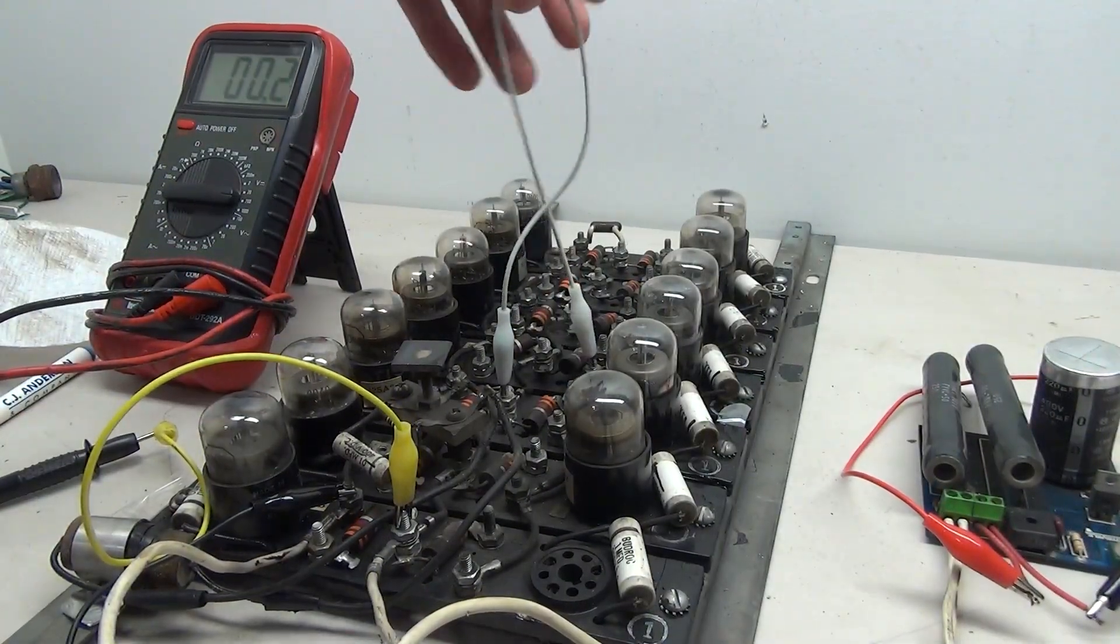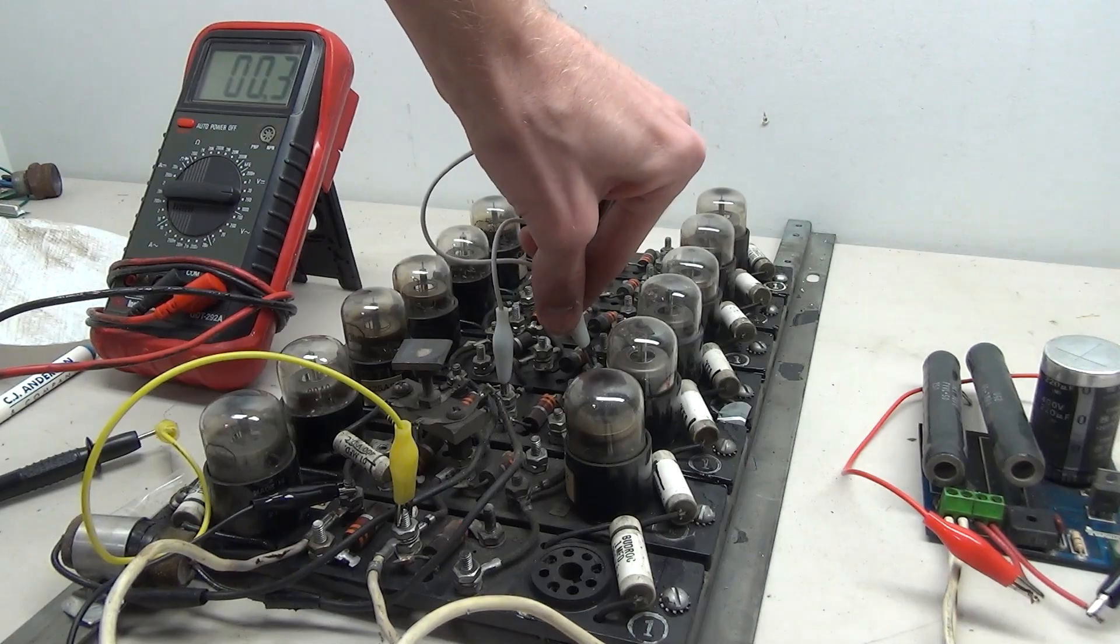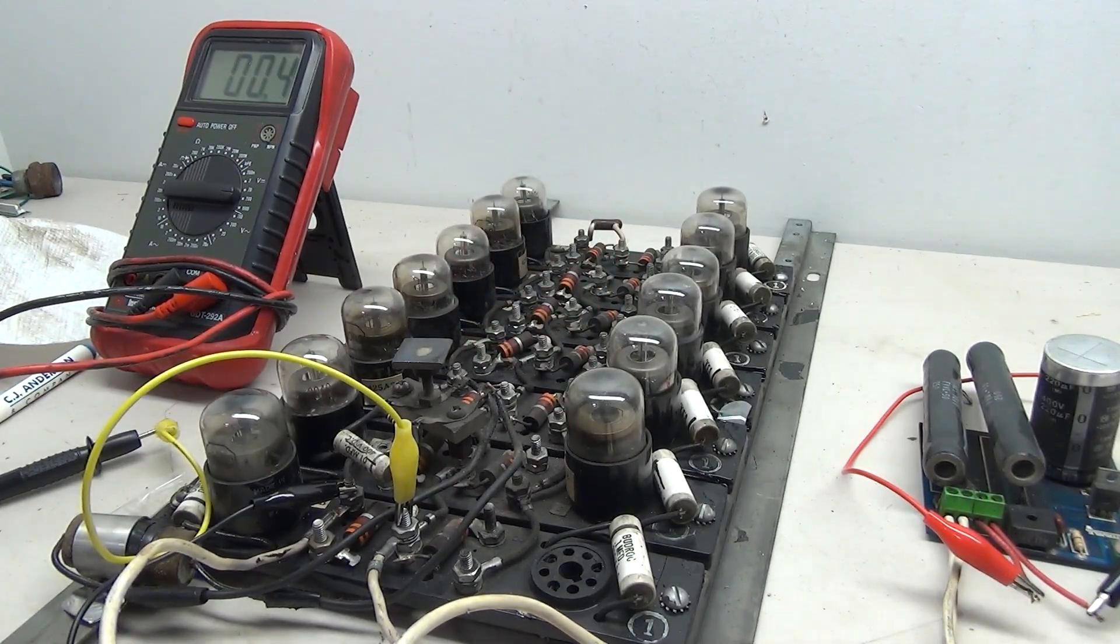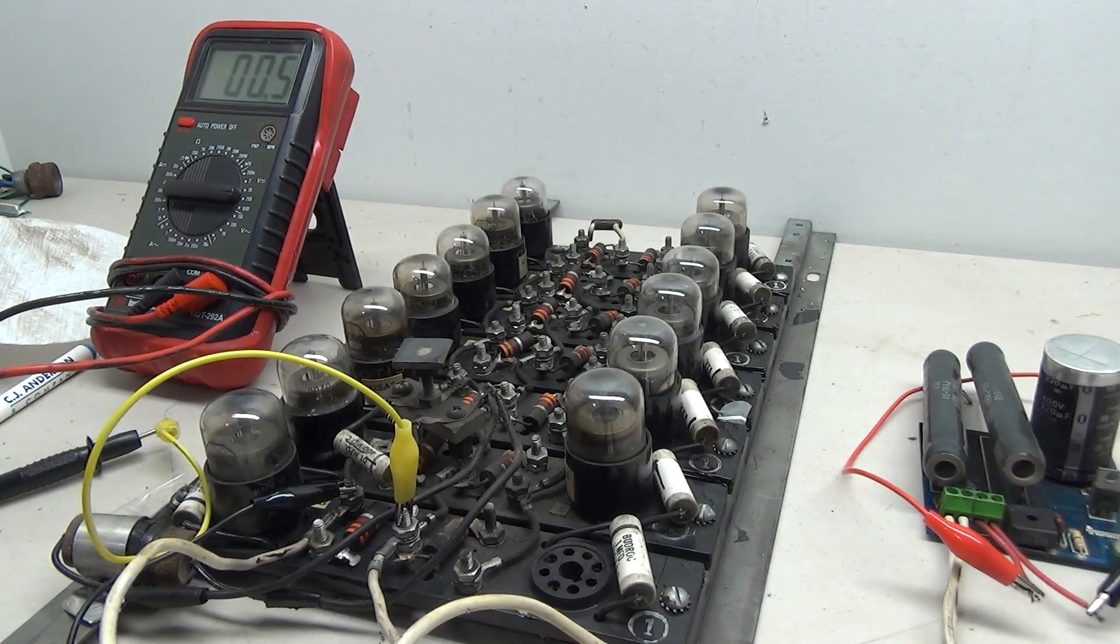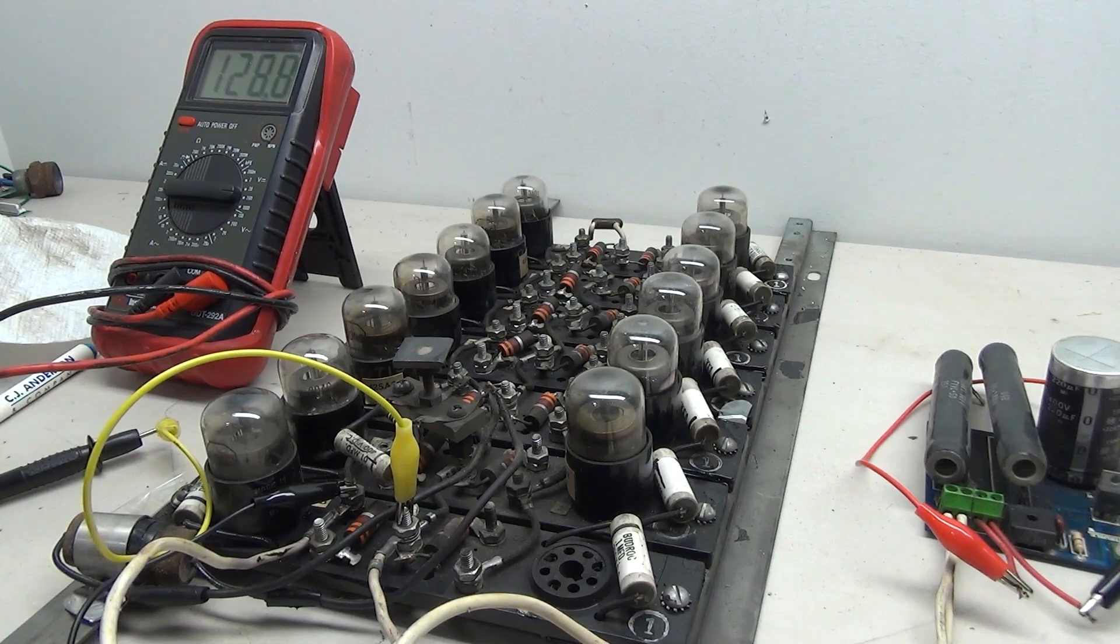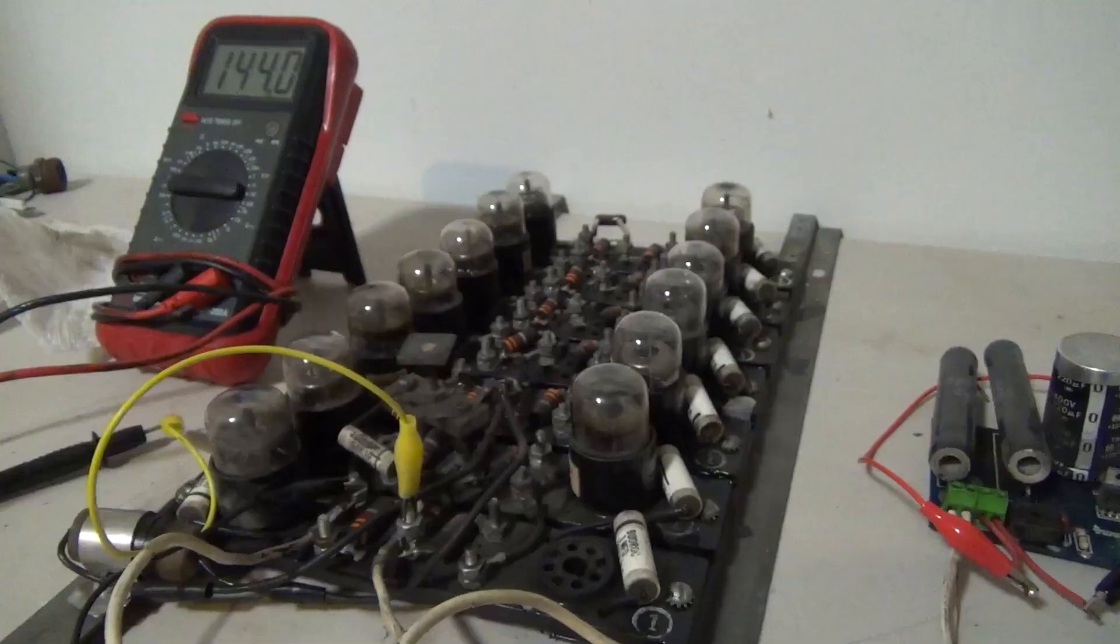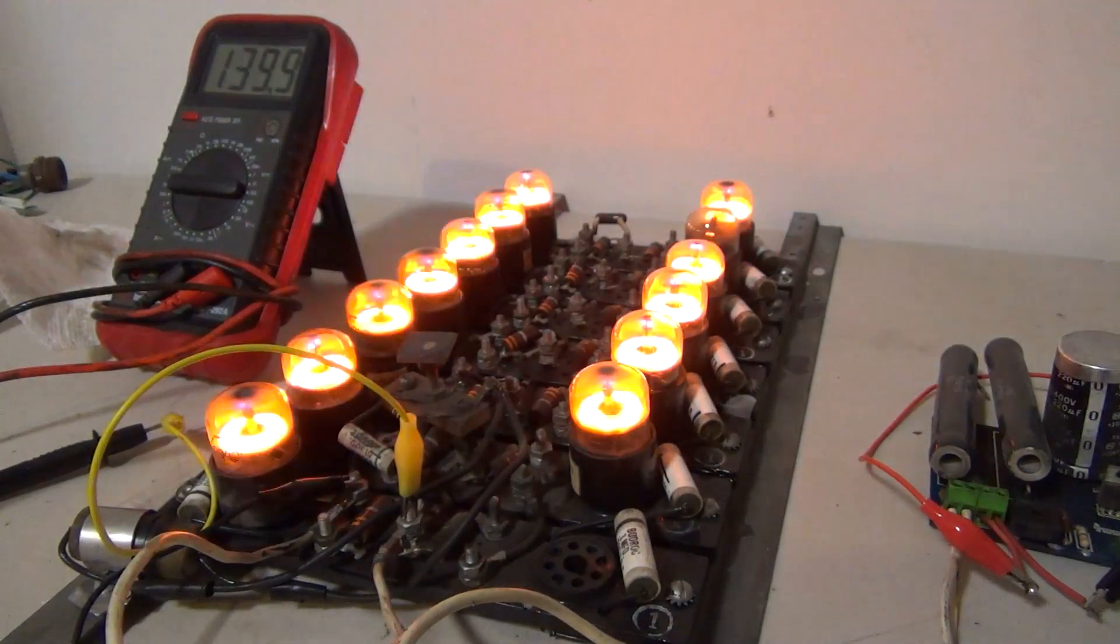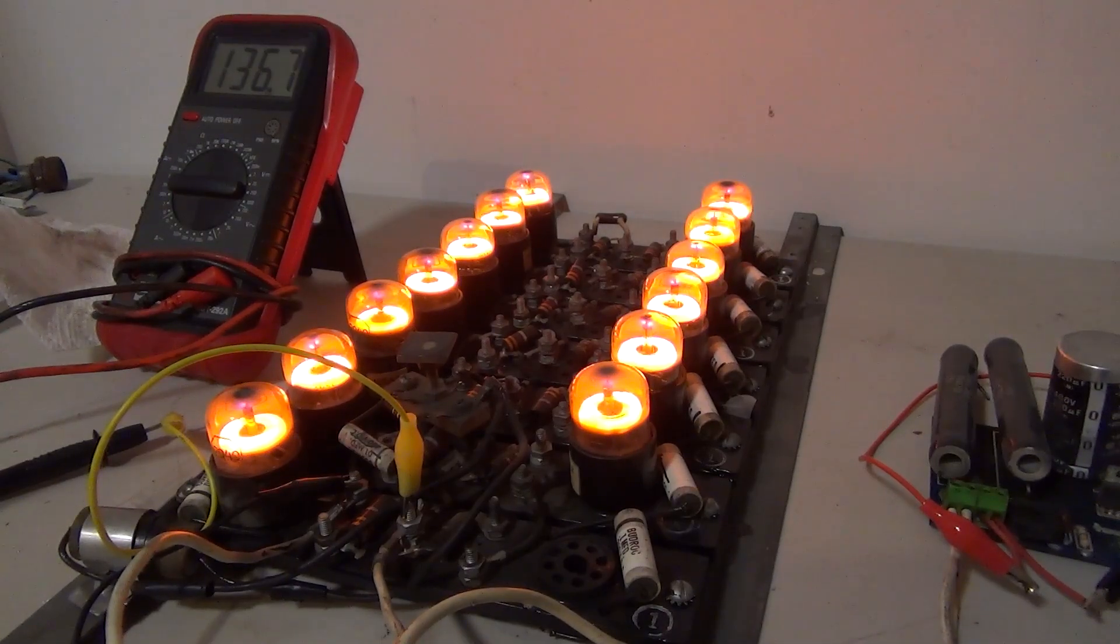So going back to the grid that I mentioned earlier in this video, we can actually see that in use here on this panel. The grid allows us to crossfire the tubes, which means we can activate multiple tubes using one tube. Now this is something that would be useful if you had multiple call buttons in a bank of elevators. So both buttons would light up when you activate one. And because of the way that this panel is wired, I actually have to activate two tubes to get the same effect, but you can see all of them light up and it looks really cool.